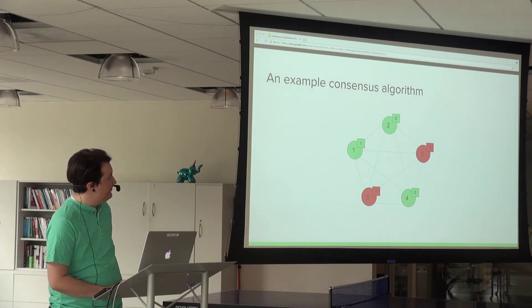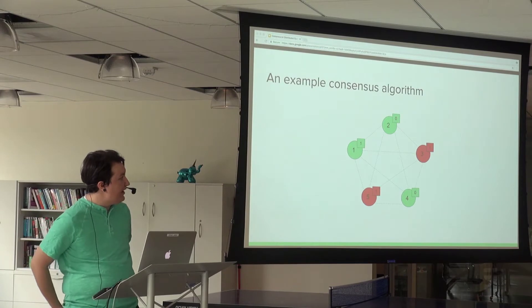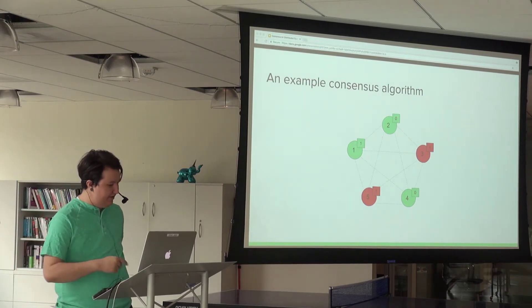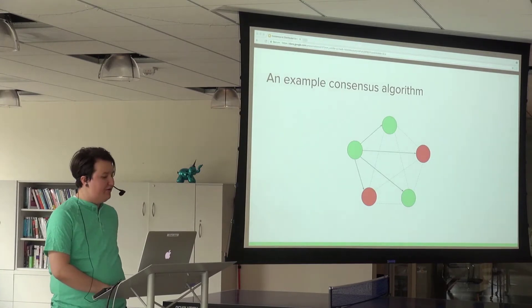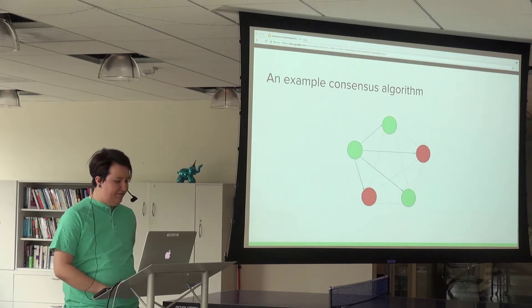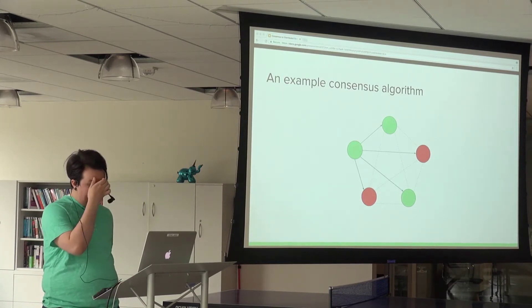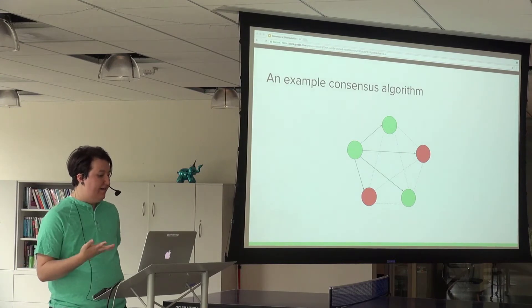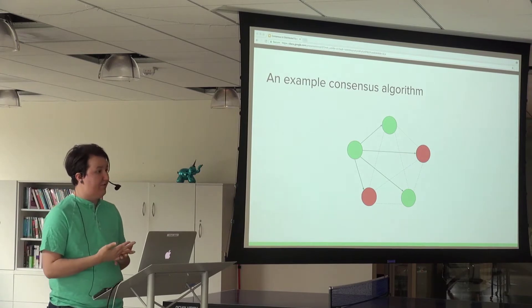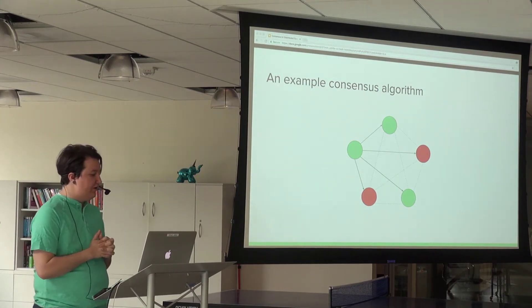Here's an example: we have five nodes. Three of them - one, two, and four - are up right now. Three and five are down so they can't communicate. Node one says 'I'm node number one and my initial value is one.' In the second round, every node broadcasts not just who they are but also what their idea of the other live nodes is.